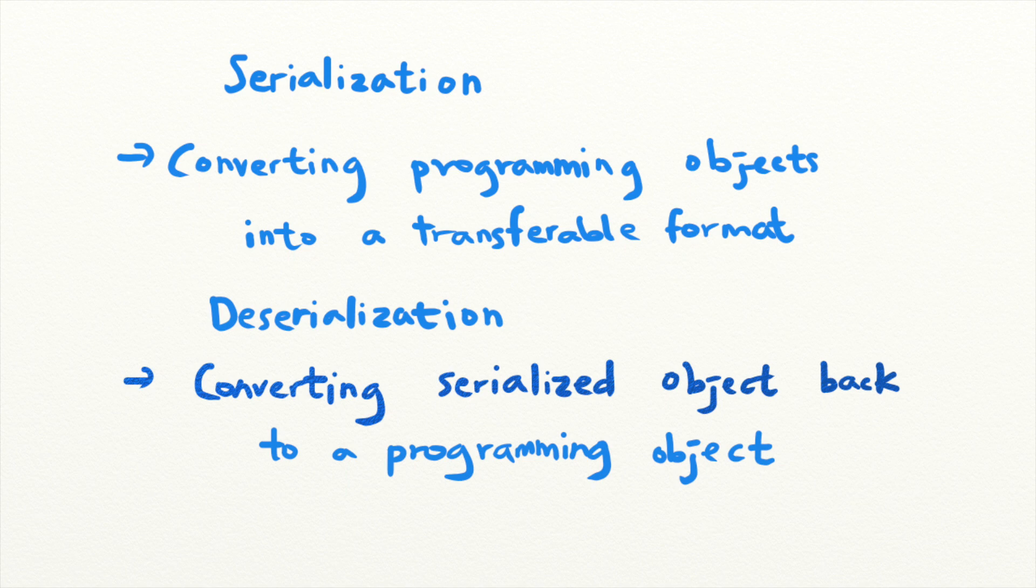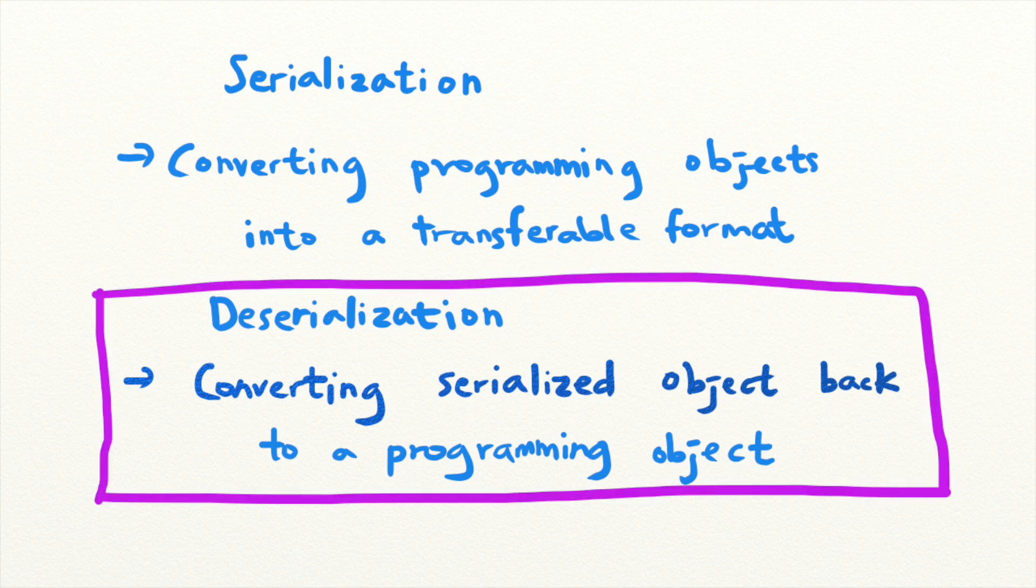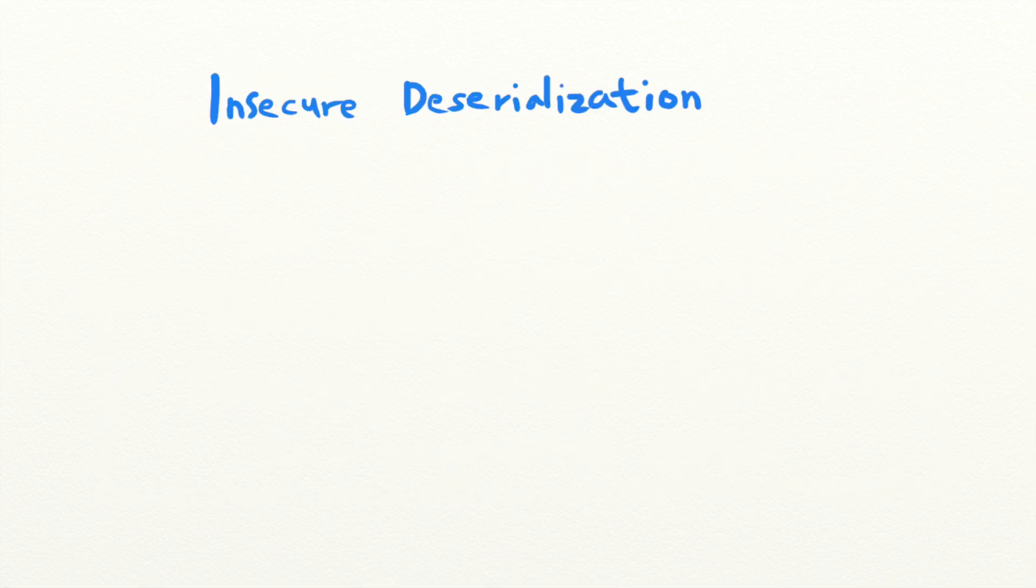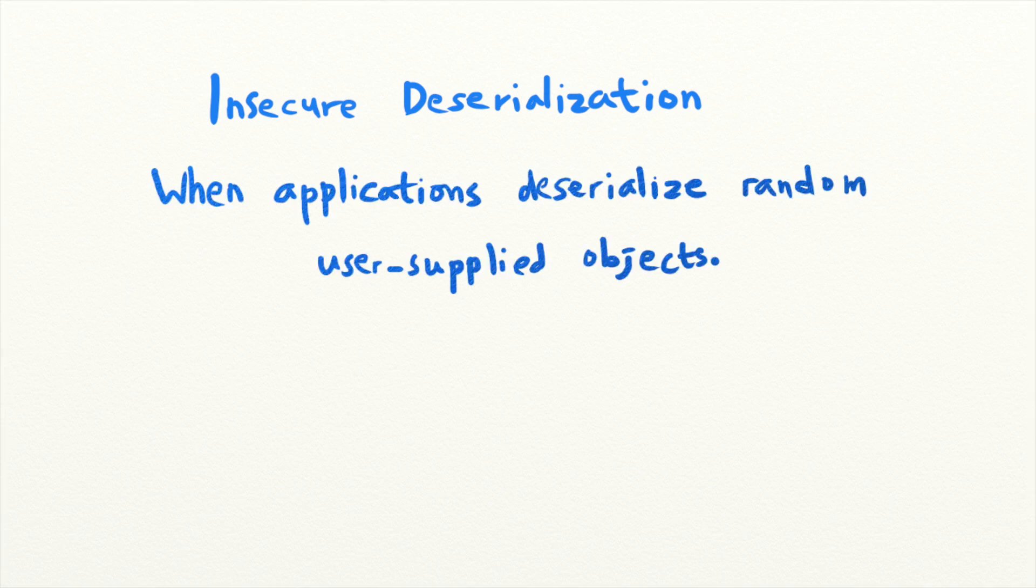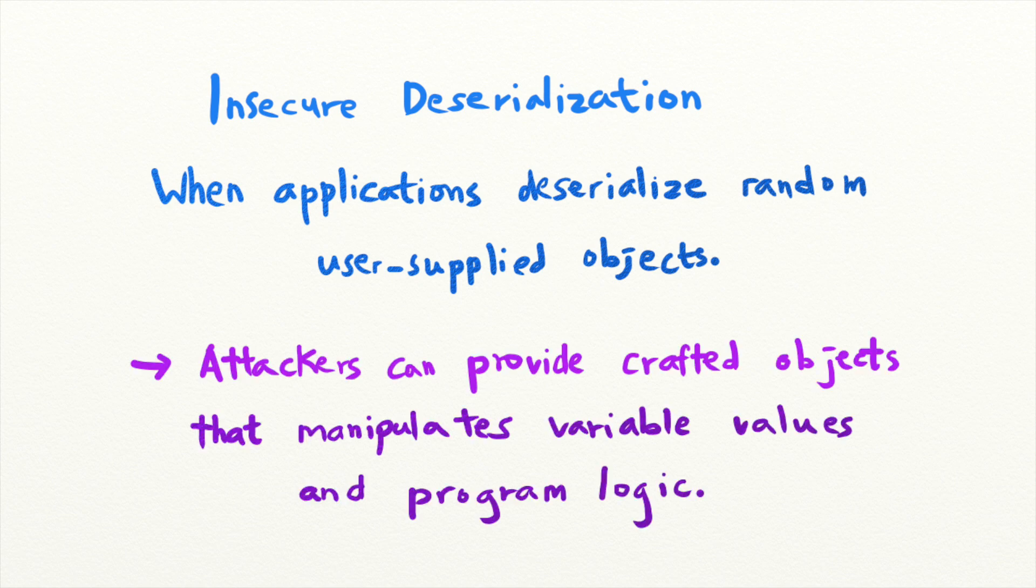Today, let's talk about a vulnerability that arises in this process. Insecure deserialization vulnerabilities happen when applications deserialize random user-supplied objects. An attacker can provide the application serialized object that manipulates variable values and the program's logic.